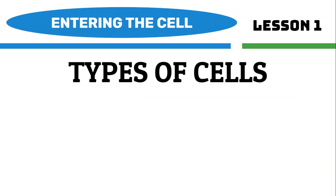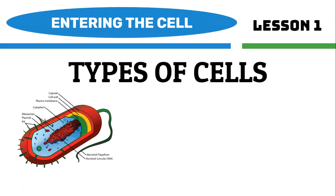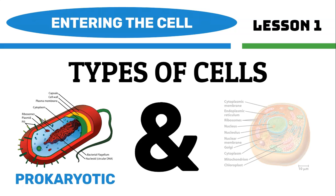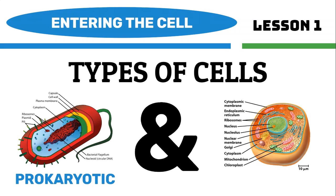Now let's look at the two main types of cells: prokaryotic cells and eukaryotic cells. As soon as we look at these cells, we know there's a major difference in how they look and their appearance. The prokaryotic cell looks almost like a capsule or a pill, whereas the eukaryotic cell looks well-defined with a circular, defined shape.